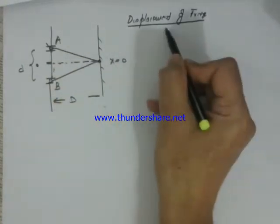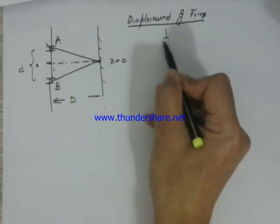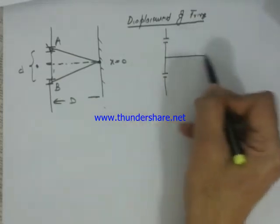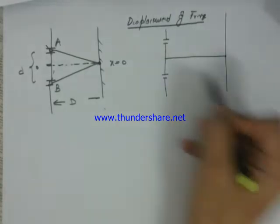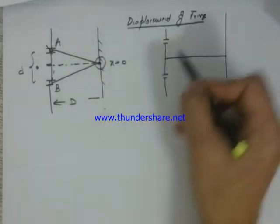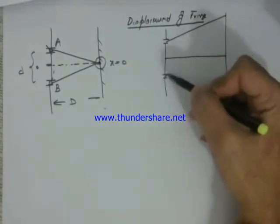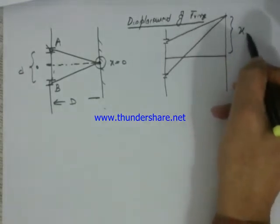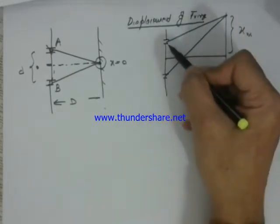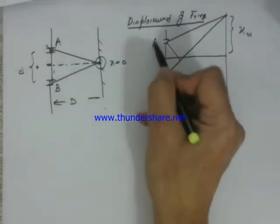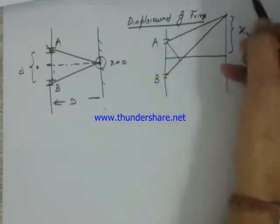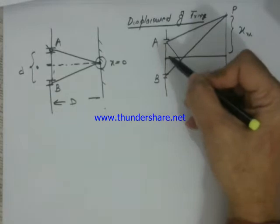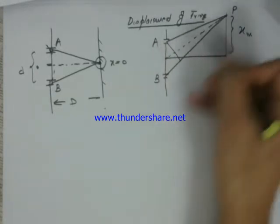At any other point you may have dark or bright fringe depending upon the path difference. Here the path difference was zero. Now let us take a location x where there is some path difference between these two rays which are starting from A and B and reaching at P.